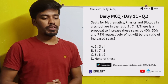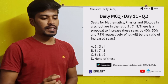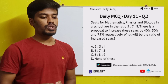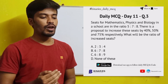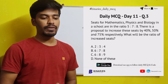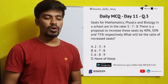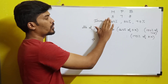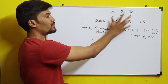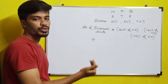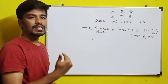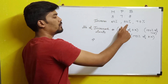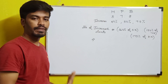The last question: seats for mathematics, physics, and biology in a school are in the ratio 5:7:8. There is a proposal to increase these seats by 40%, 50%, and 75% respectively. What will be the ratio of the increased seats? The initial ratio is 5:7:8, and the increase percentages are 40%, 50%, and 75% respectively.